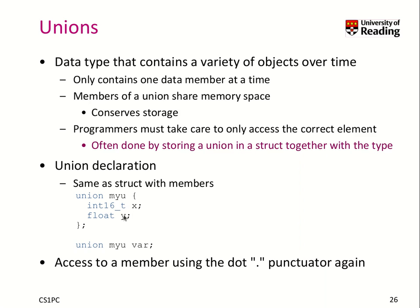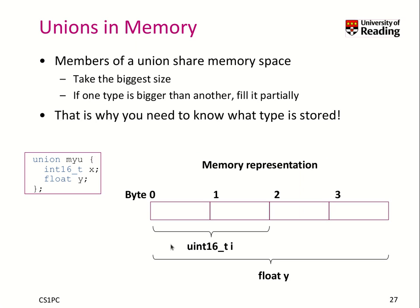Here I can store either the floating point value y or the 16-bit integer x — you cannot store both at the same time. The benefit of using a union is that you can share the memory space, conserving some storage. But you have to take care to know which element you actually stored — did I store x or did I store y? So often programmers store a union inside a structure and remember which data type they stored, so they can get back the right value.